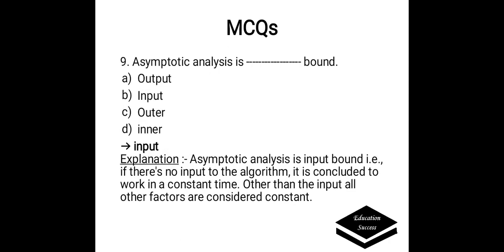A priori analysis is dash bound. Options: a) output, b) input, c) outer, d) inner. Correct answer is input. A priori analysis is input bound — that is, if there is no input to the algorithm, it is concluded to work in a constant time. Other than the input, all other factors of an algorithm are considered as a constant.